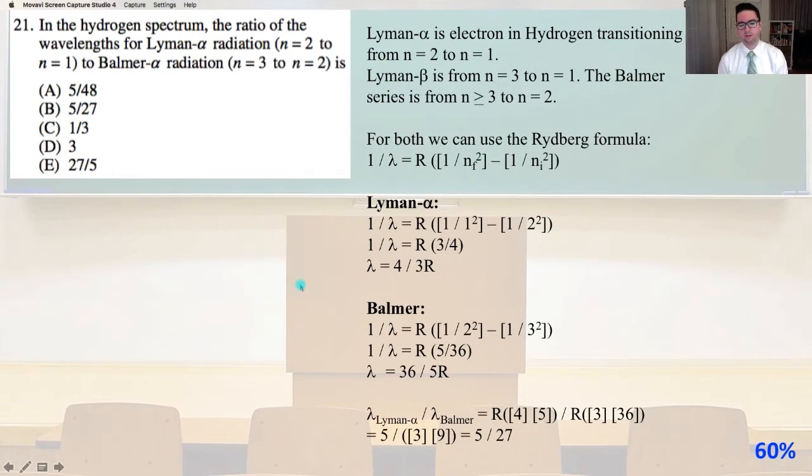For the wavelength lambda of the Lyman alpha divided by the wavelength of lambda for the Balmer series, we have r times the quantity 4 times 5 divided by r times the quantity 3 times 36. We'll do some algebra. That equals 5 over 27, and that is answer B.